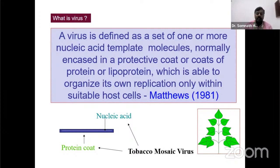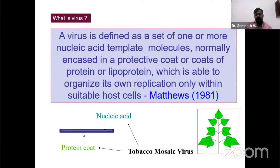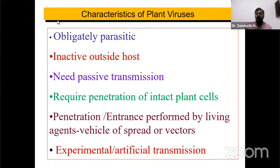As seen in the picture, the virus is nothing but a set of nucleic acid molecules protected in a coat protein. This definition was given by Matthews in 1981. Before finalizing this definition, there were many earlier definitions, but they were not matching the criteria of viruses because in the initial stages the symptoms of viruses resembled symptoms of micronutrient deficiencies, viroids, and bacteria.